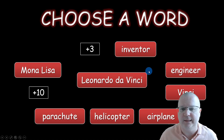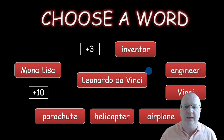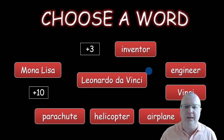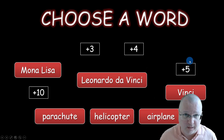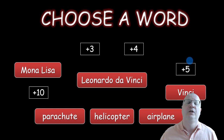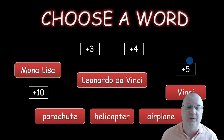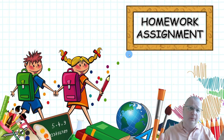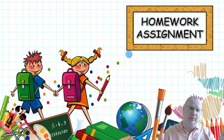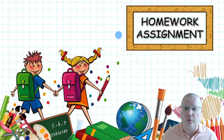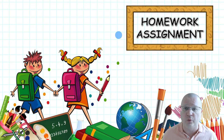Students are motivated to make longer sentences because each word gets them a point. As you probably know, I always include a homework assignment — this is an optional activity. You don't need to do it in class; you can assign it as homework or skip it. The homework assignment is a poster: students draw their favorite invention and write about it.